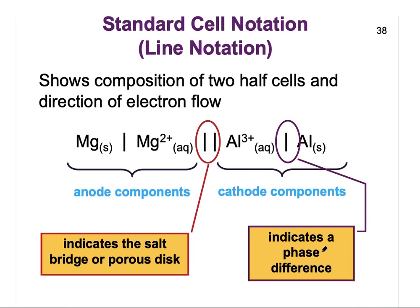There is another way to represent what is happening in a galvanic cell, known as standard cell notation or line notation. It shows the composition of the two half cells and the direction of electron flow. On the left-hand side we have our anode components, and on the right-hand side we have our cathode components. The anode is where oxidation takes place and electrons leave, traveling to the cathode on the right.